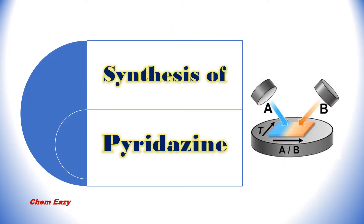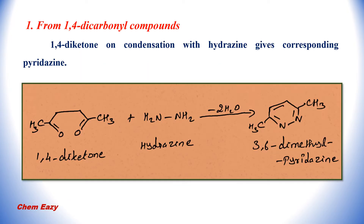Now let us see some of the synthesis of pyridazine. In the first method, pyridazine can be synthesized from 1,4-dicarbonyl compounds. For example, this 1,4-diketone, one of the dicarbonyl compounds, undergoes condensation with hydrazine and produces the corresponding pyridazine, that is 3,6-dimethylpyridazine.